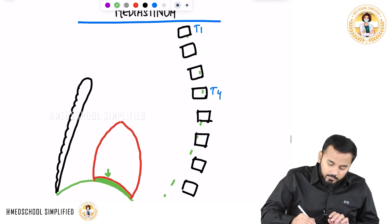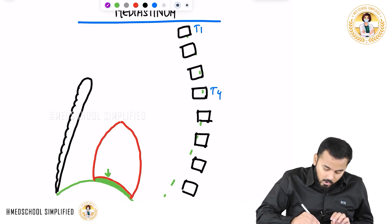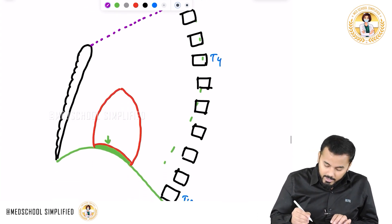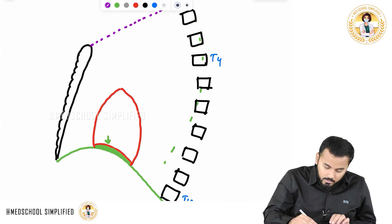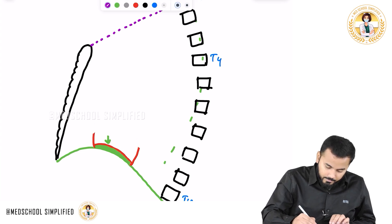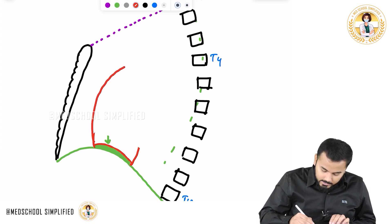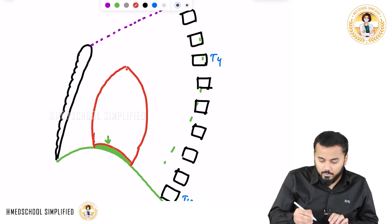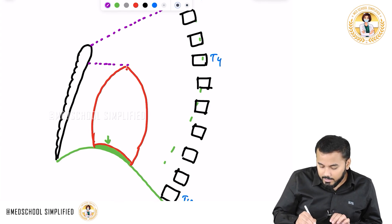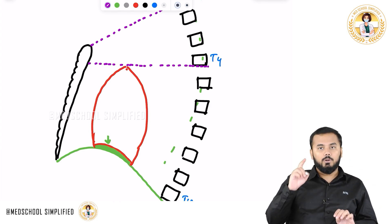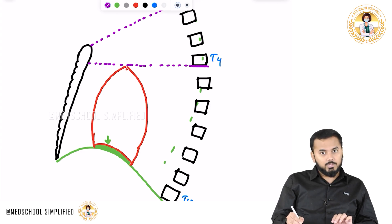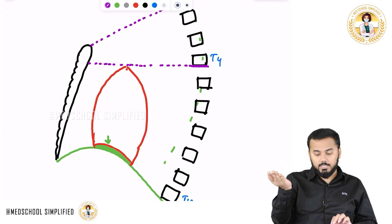If I draw an imaginary line from the tip of the sternum to T1, and another imaginary line from the sternum touching the superior border of the heart to the lower surface of T4 — remember this: it is touching the lower surface of T4, not the middle and not the top.